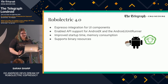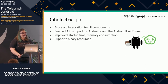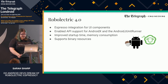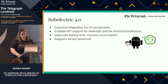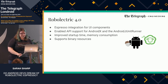So where does Roboelectric fit into this? Roboelectric 4.0 was released in October, around the same time that the Android test stuff went stable to 1.0. The team has been working quite closely together to try and unify some of their languages as well. Roboelectric 4.0 integrated the Espresso API for UI components, enabled API support for AndroidX and the Android JUnit runner, improved startup memory consumption when running tests, and supports binary resources.